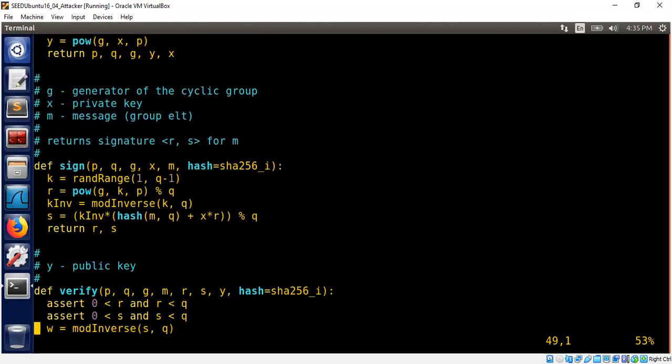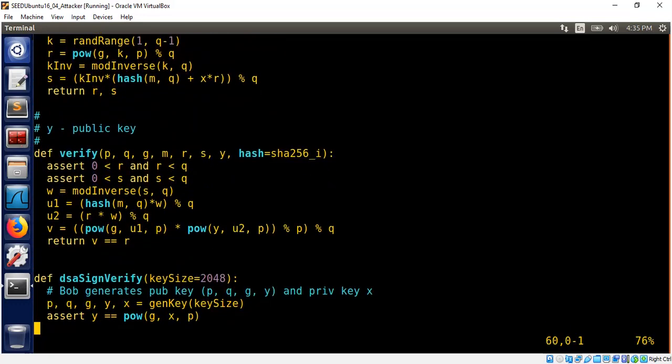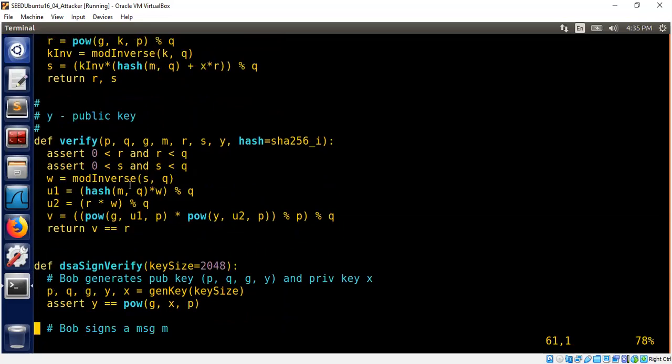So signature works as follows. There are a lot of parameters. I could have made them global variables or put some object structure. But anyway, I randomly generate a k, as I talked about on the whiteboard, g^k mod q after doing mod p. And then compute k inverse hash of message plus x times r mod q. That will give us r and s. It's just implementation of the algorithm I talked about on the whiteboard.